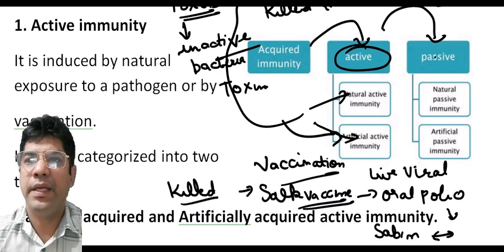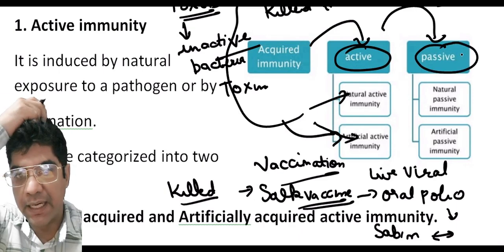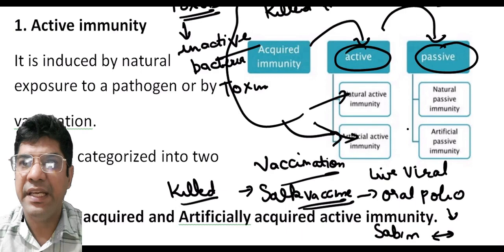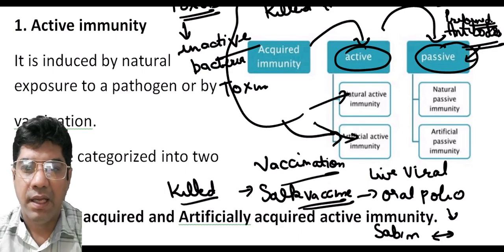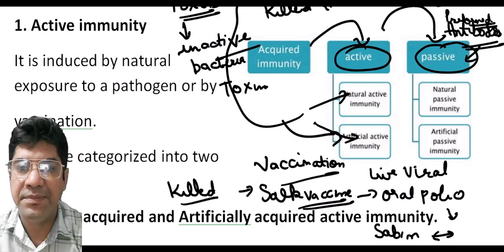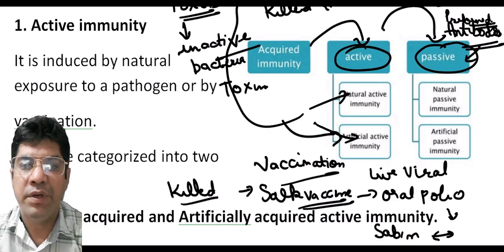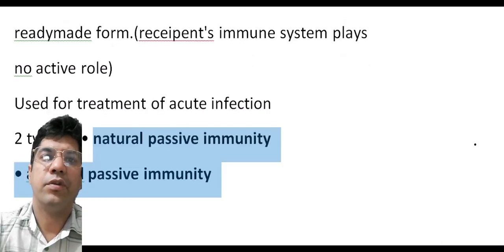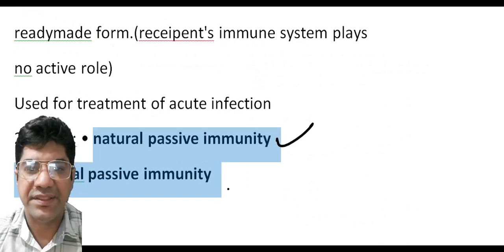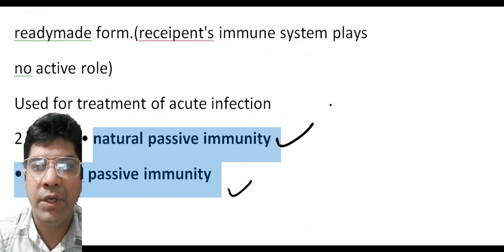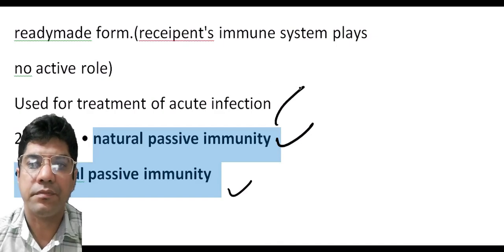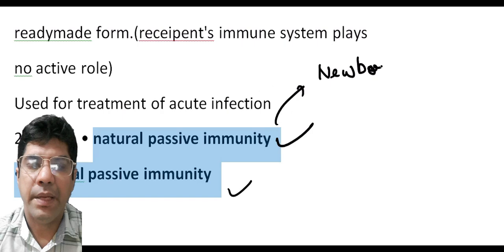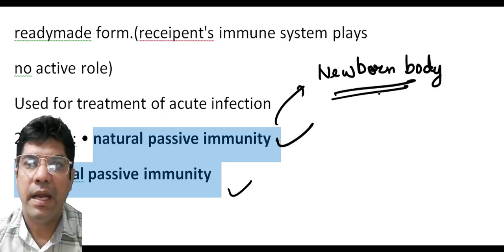Passive acquired immunity is the type that occurs when an individual receives preformed antibodies from an external source rather than producing these antibodies themselves. It can be natural passive immunity or artificial passive immunity. Natural passive immunity occurs when a newborn baby acquires antibodies from the mother.